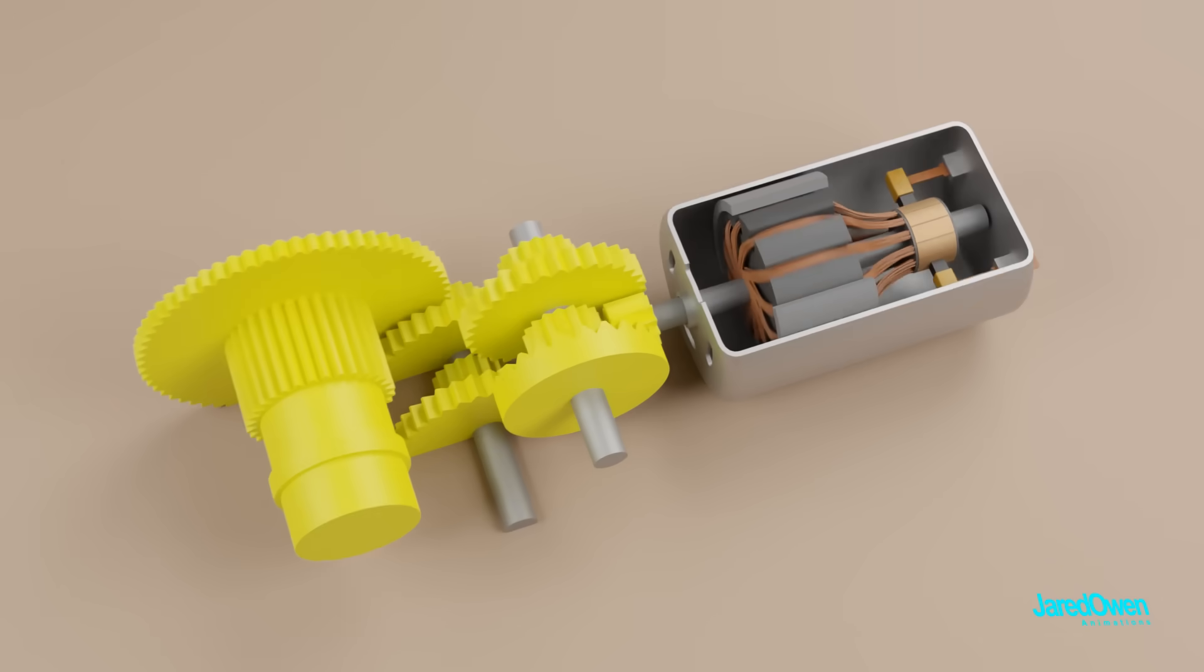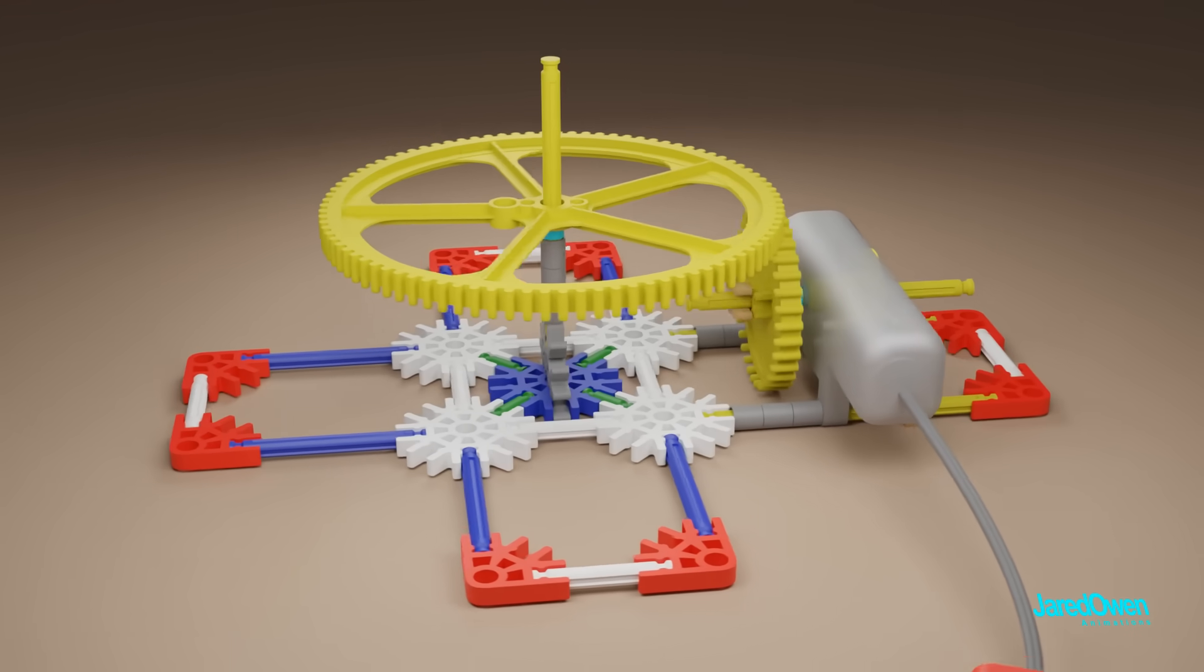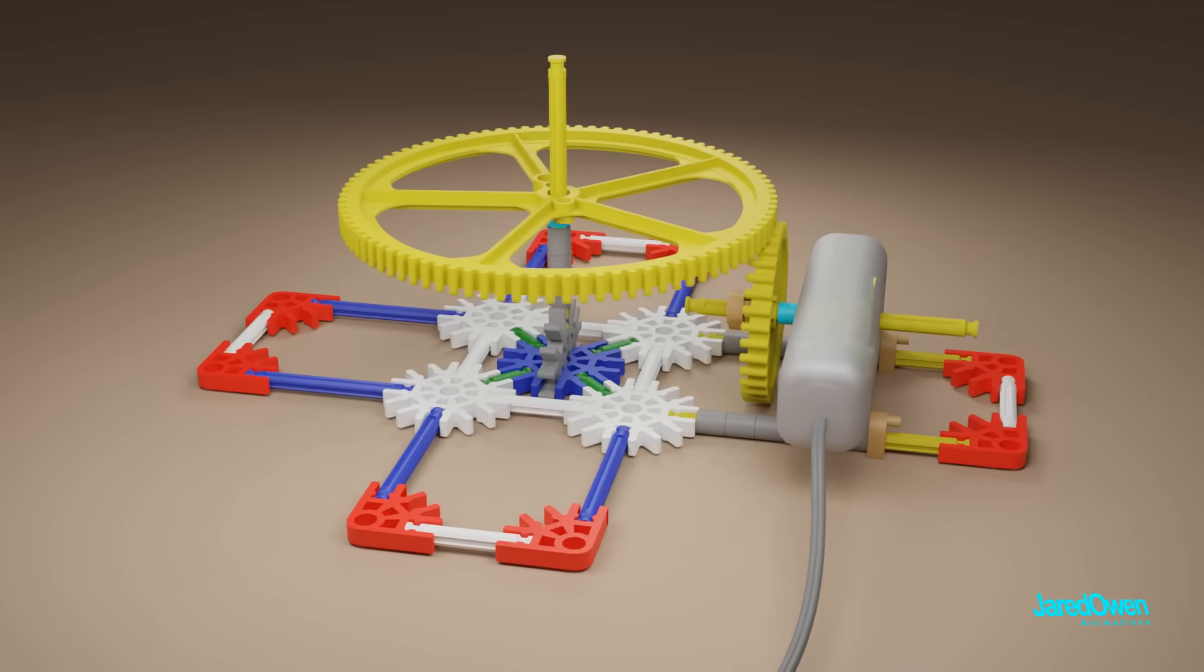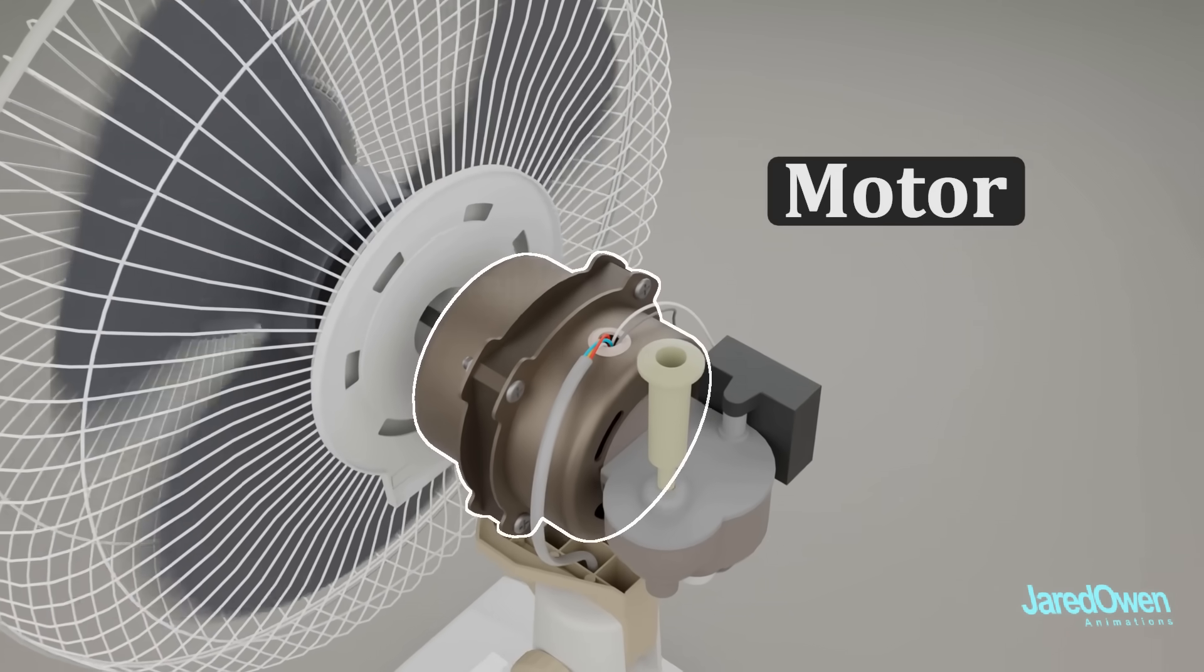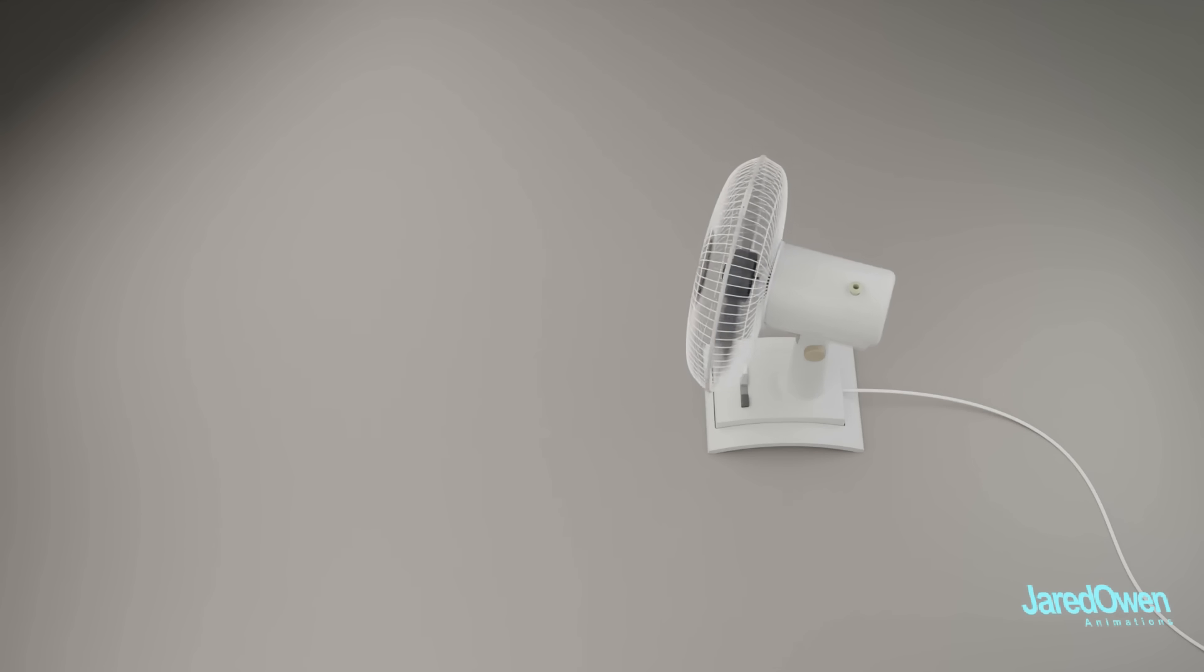Once it's spinning, we can use this to make different devices move. In this case, a kid's toy. Or even a fan that cools your room. The spinning of the motor can be converted to other types of movement, such as the side-to-side motion that we see in this fan.